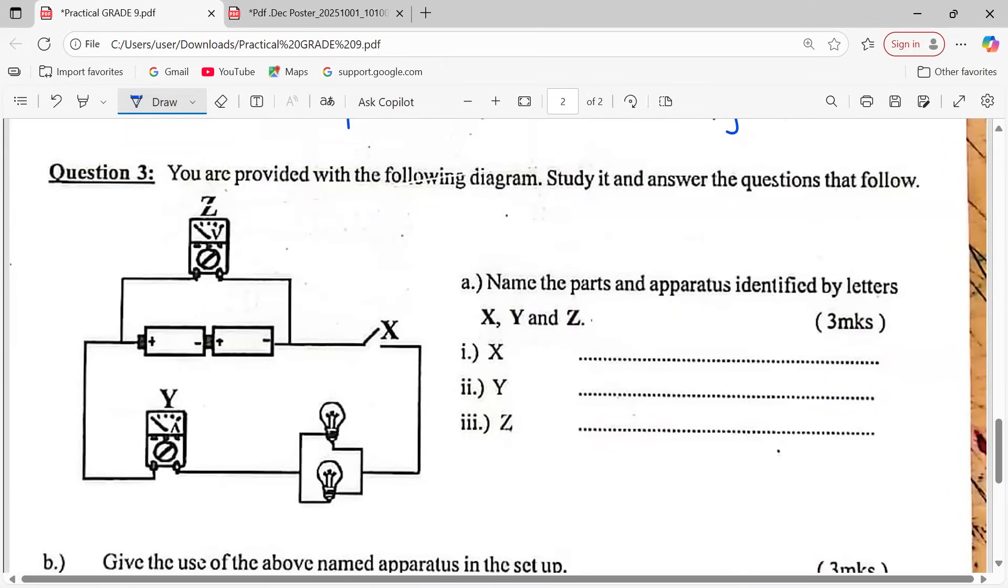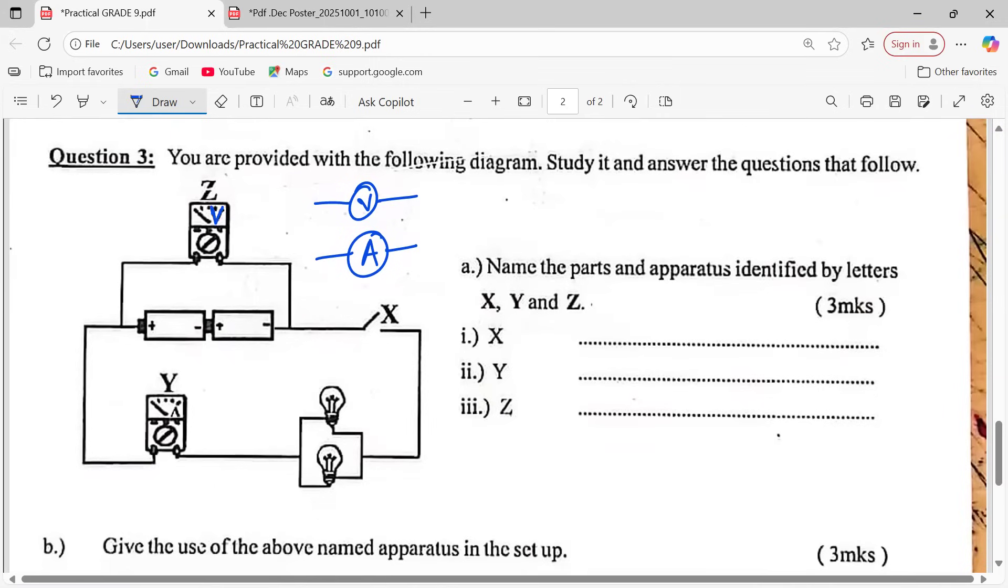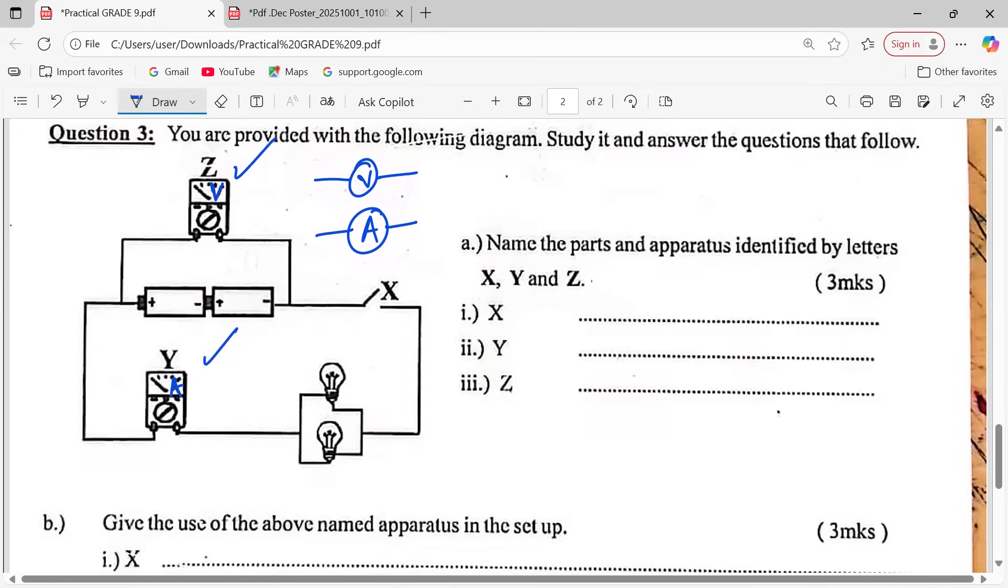Question three: You are provided with the following diagram. Study it and answer the questions that follow. You can see this is a circuit diagram. From how it is, we are supposed to correct a few things. That's how a voltmeter should appear. Then when an ammeter is represented in a circuit diagram, this is how it should appear. But now looking at the V here, the Z is a voltmeter. Looking at the A at this point Y is an ammeter. So the first thing is to name the apparatus. One is X. X is a switch.